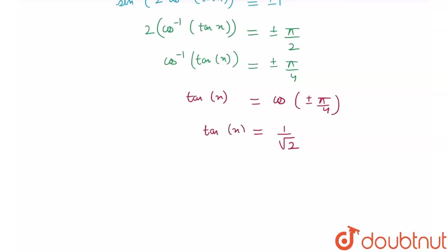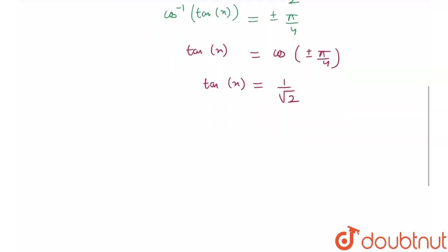Therefore, my tan x is equal to 1 by root 2. Therefore, I'll get the value of x is equal to n pi plus minus tan inverse 1 by root 2. Therefore, this is the value of x where n belongs to R. Thank you.